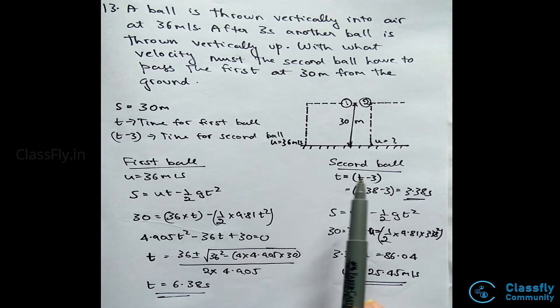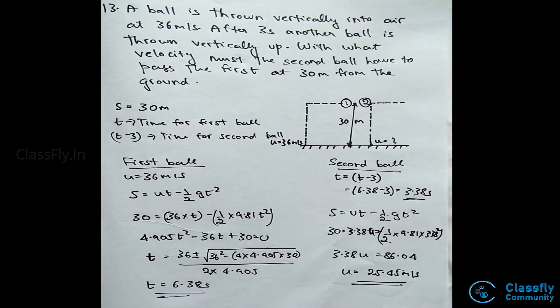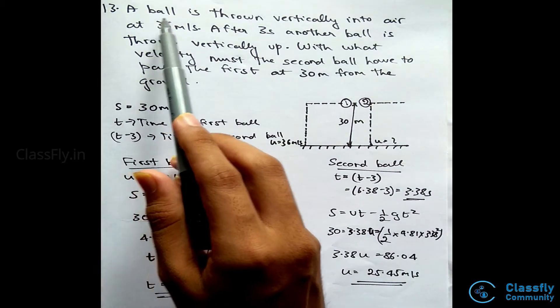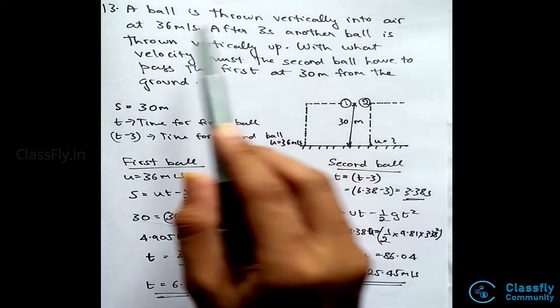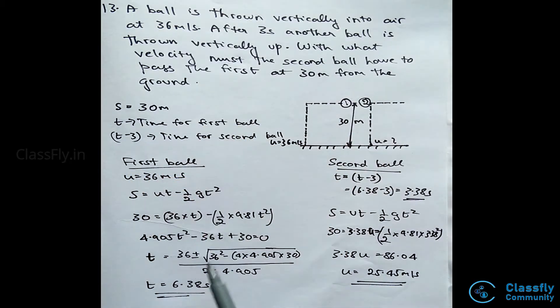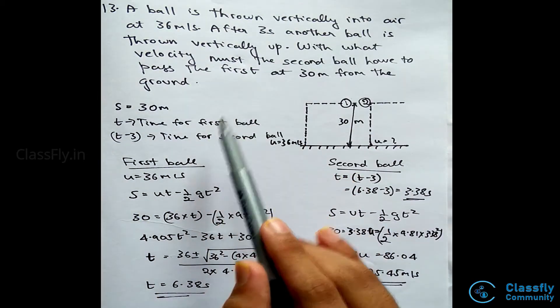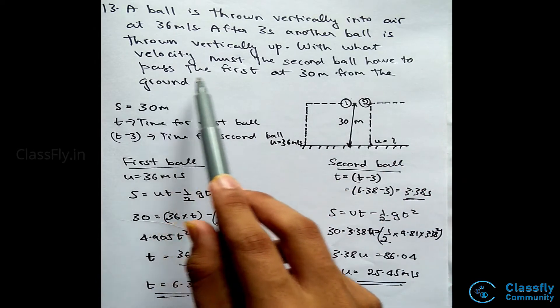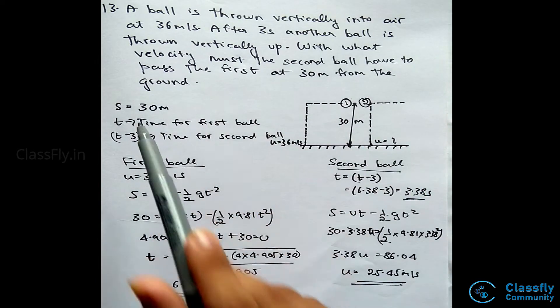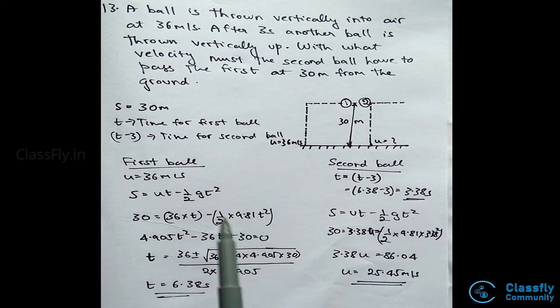Hi guys, today let us solve numericals based on the concept of motion due to gravity. A ball is thrown vertically into air at 36 meters per second. After three seconds, another ball is thrown vertically up. With what velocity must the second ball have to pass the first at 30 meters from the ground?